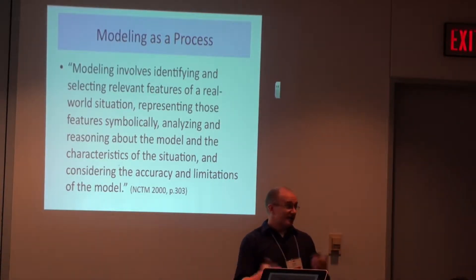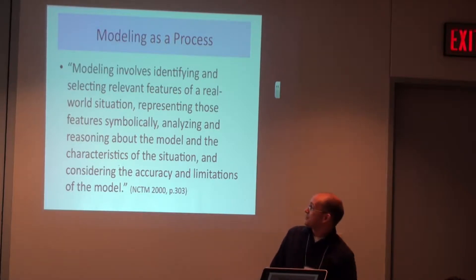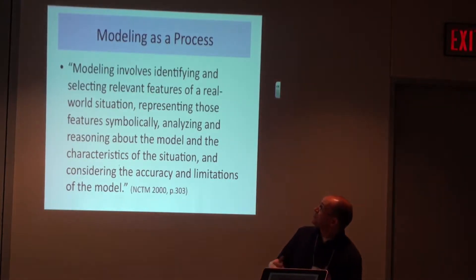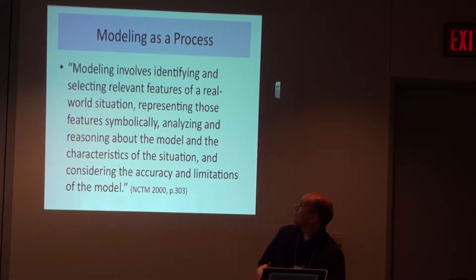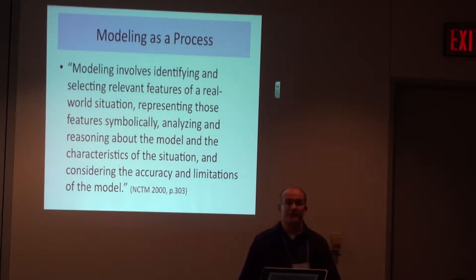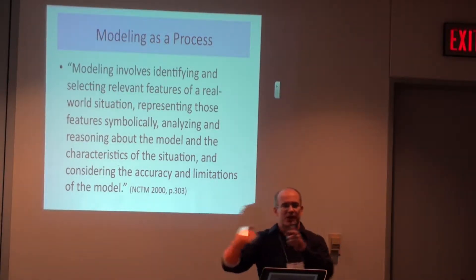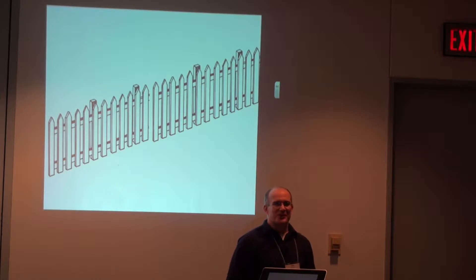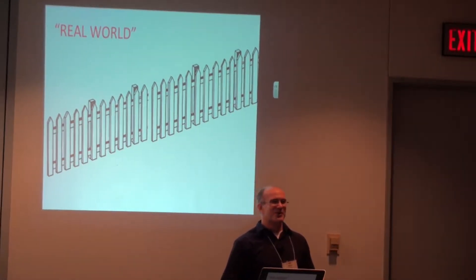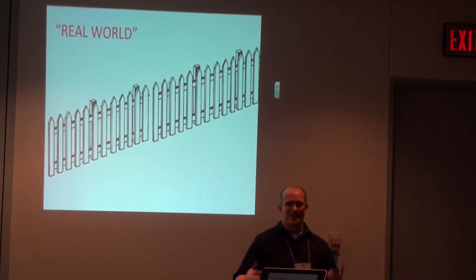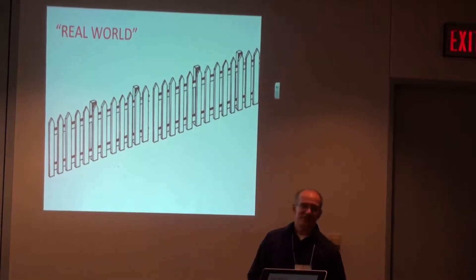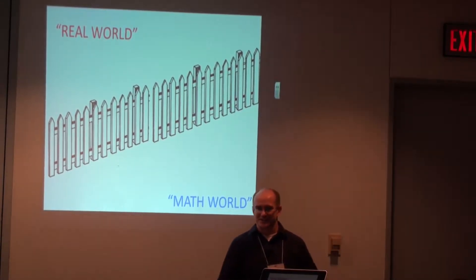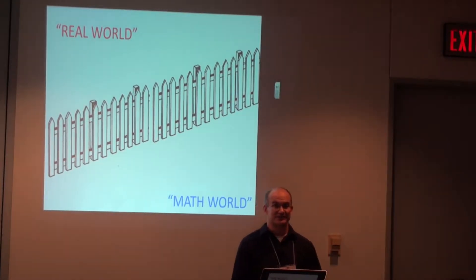NCTM in 2000 described that process well in the Principles and Standards document. They said modeling involves identifying and selecting relevant features of a real-world situation, representing those features symbolically, analyzing and reasoning about the model, and considering the accuracy and limitations of the model — really four parts of the process. In my brain, it looks like this: students often see the world as two sides. There's the real world we live in, and then there's a fence separating it from the math world, and often we see the two as totally disconnected.